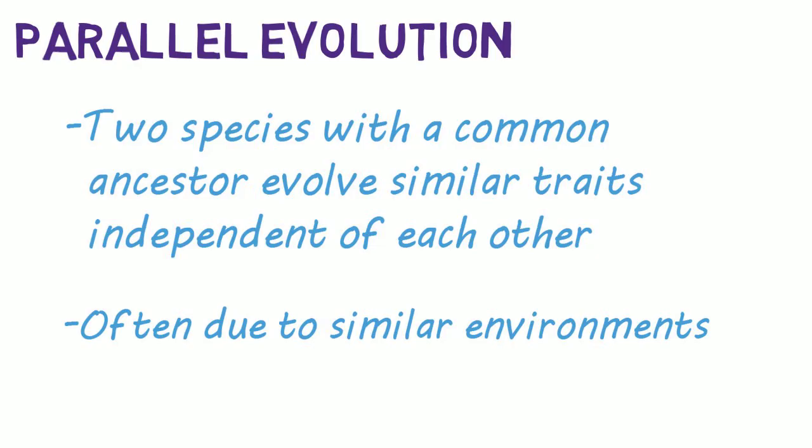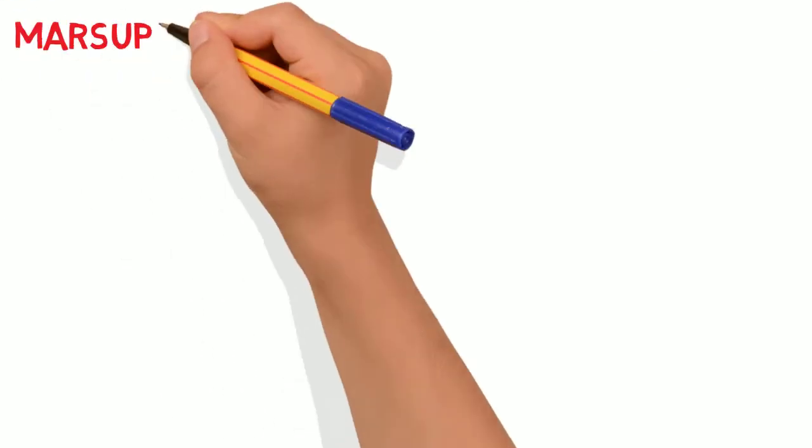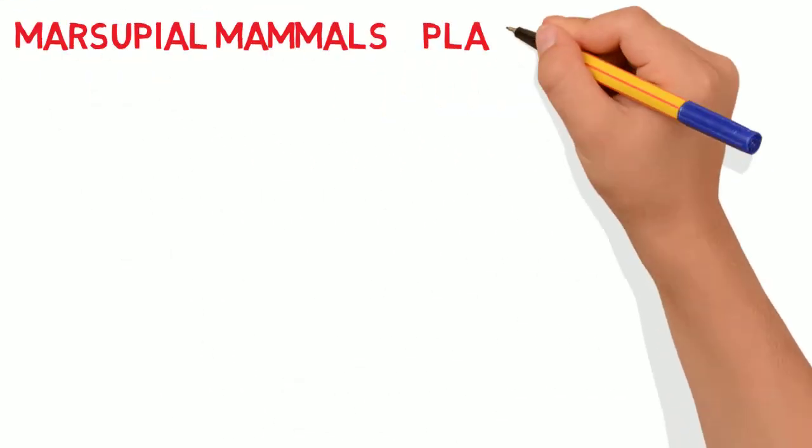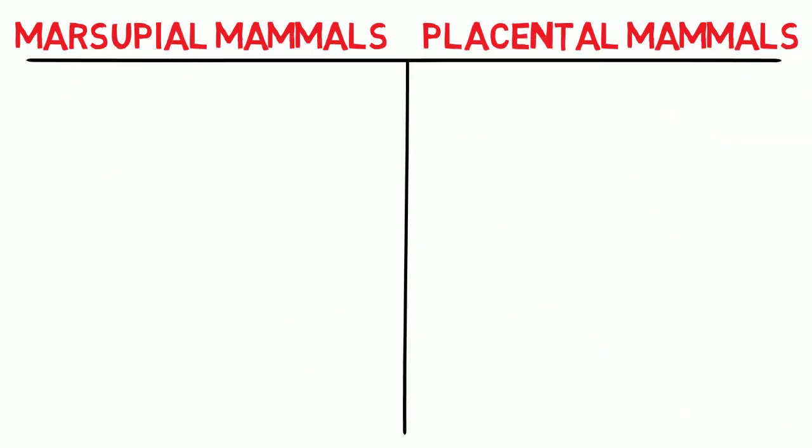There are many classic examples of parallel evolution between the marsupial mammals of Australia and the placental mammals elsewhere. All of these mammals share a common ancestor, but were separated early on. Despite this separation, they evolved many of the same traits. So let's explore a few of those.